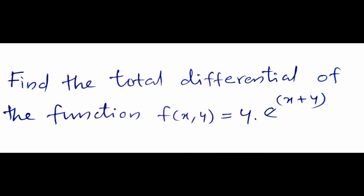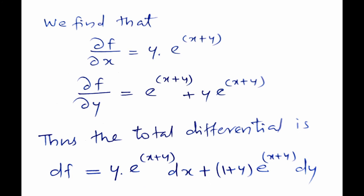Our next question: find the total differential of the function f(x, y) = y·e^(x+y). We find ∂f/∂x = y·e^(x+y). Then, differentiating with respect to y and keeping x constant, we apply the product rule, giving ∂f/∂y = e^(x+y) + y·e^(x+y). Thus the total differential is df = y·e^(x+y)·dx + (1 + y)·e^(x+y)·dy. That is our final answer.